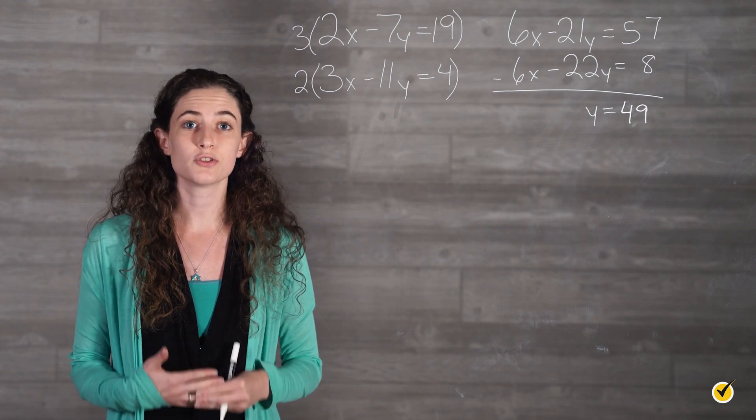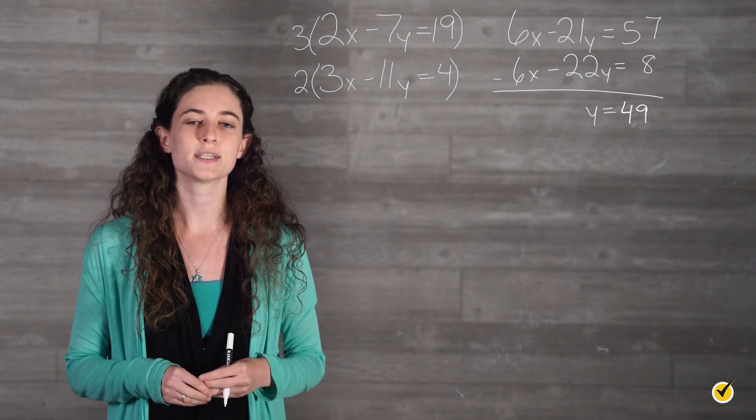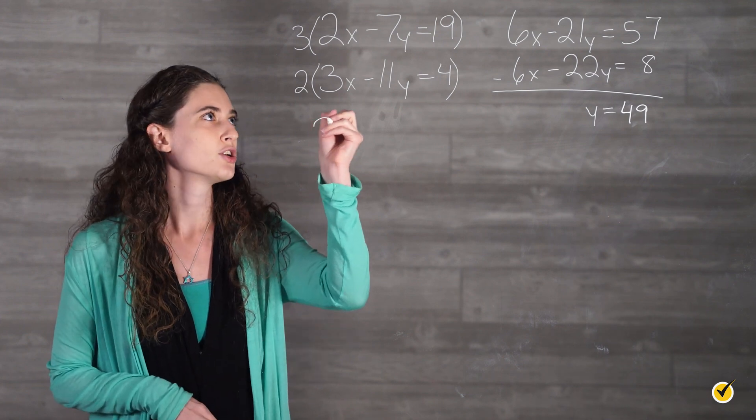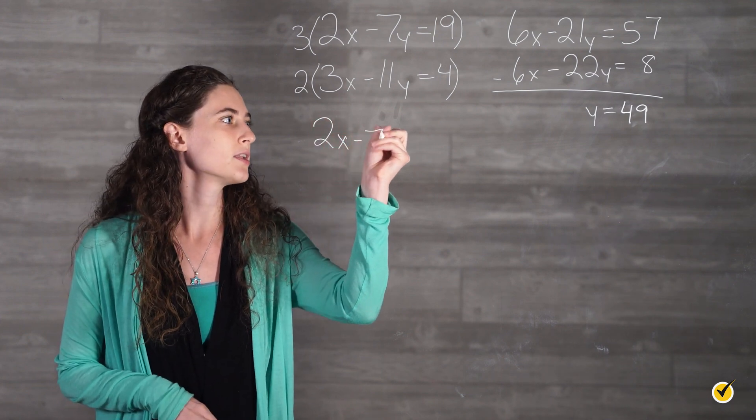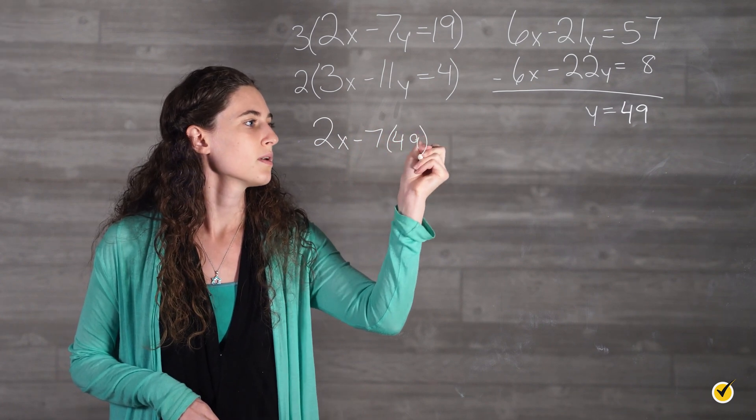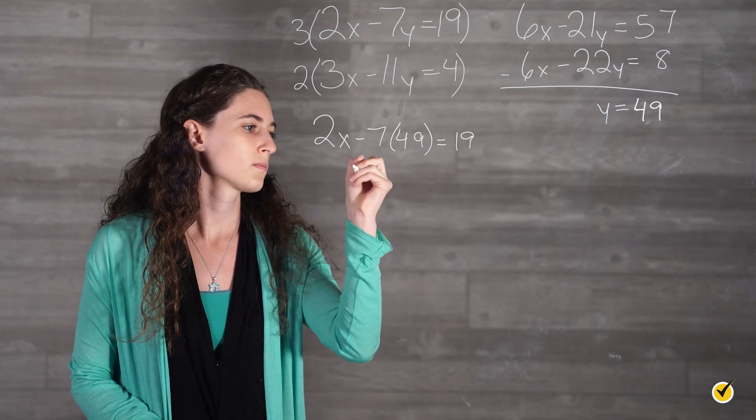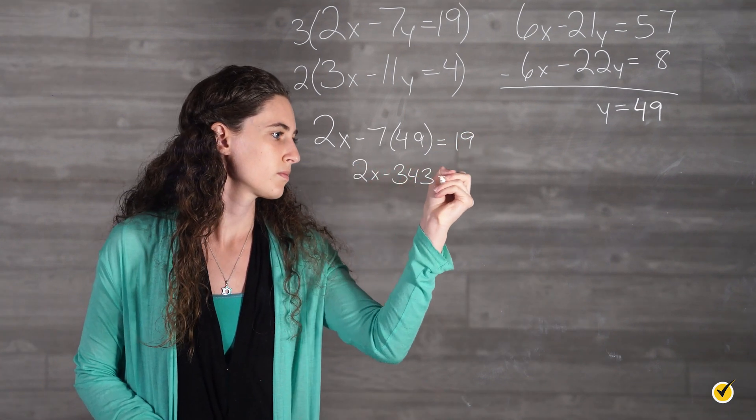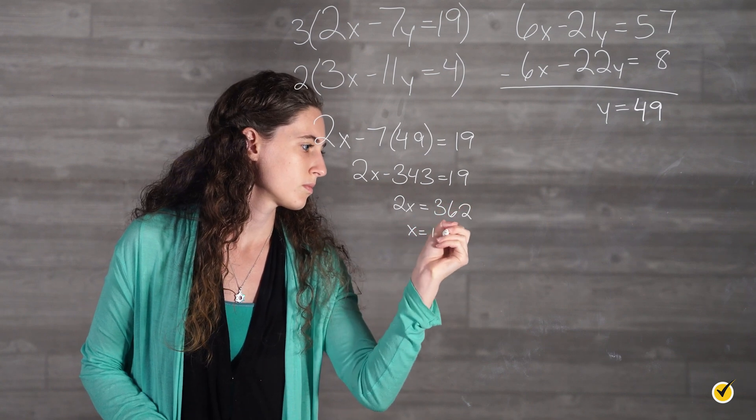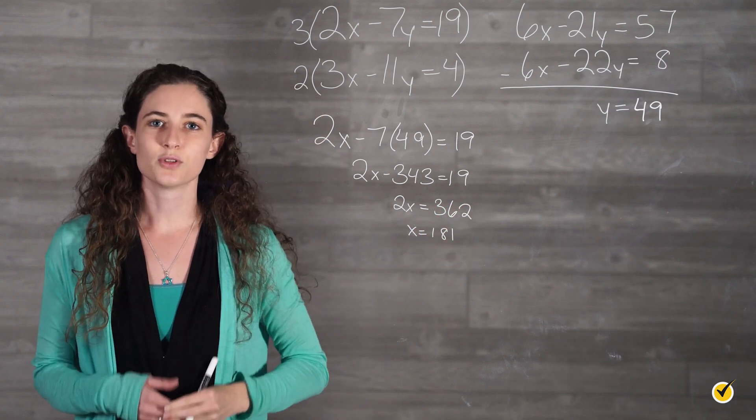Now we are going to use this information to plug y into either equation and solve for x. I am going to use the equation 2x minus 7 times 49 equals 19. So x is equal to 181.